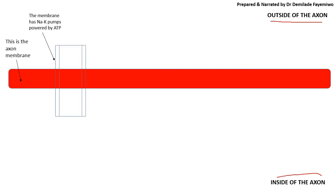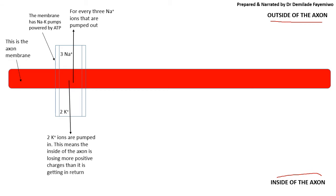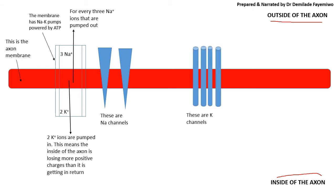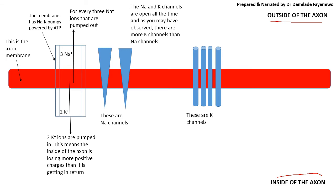That is our sodium-potassium pump. For every three sodium ions that are pumped out, we have two potassium ions that are pumped in. This means the inside of the axon is losing more positive charges than it is getting in return. We also have sodium channels and potassium channels — there are more potassium channels than sodium channels — and these channels are open all the time, unlike the voltage-gated channels.